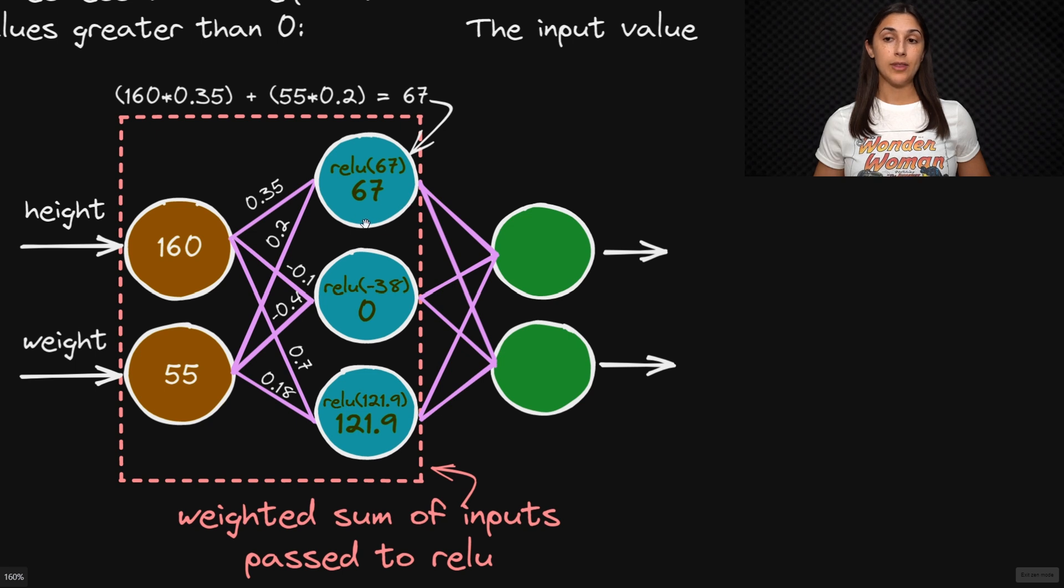So for this node here, we calculate the weighted sum of inputs as 160 times 0.35 plus 55 times 0.2, which evaluates to 67. Then when we pass this weighted sum to ReLU, then ReLU will evaluate to the maximum of either zero or 67, which of course in this case is 67.